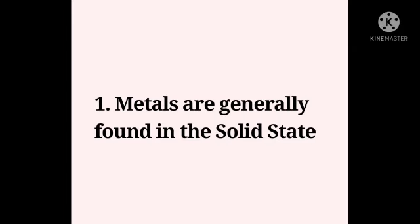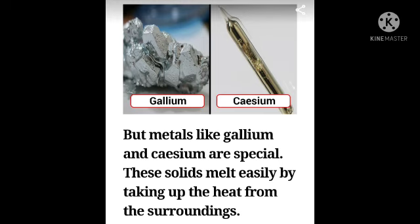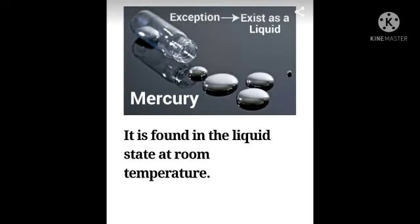The first physical property of metals is that they are generally found in solid states. Copper, silver, iron, and gold are all solid under normal conditions. But metals like gallium and caesium are special — these solids melt easily by taking up heat from the surroundings. Mercury is an exception that exists in a liquid state at room temperature.